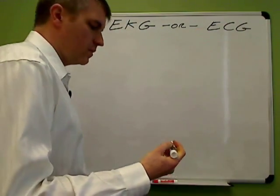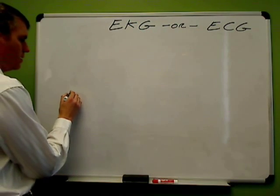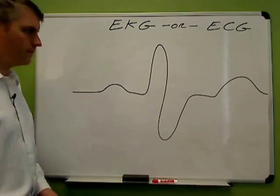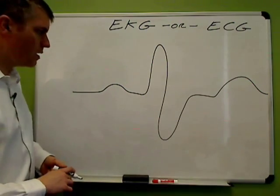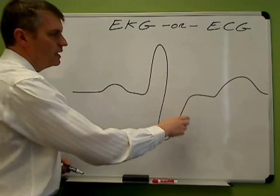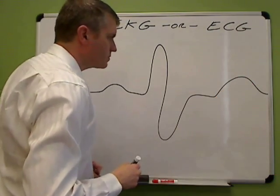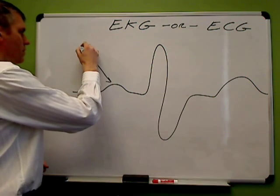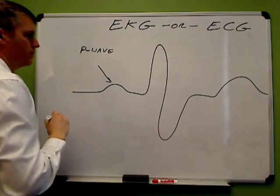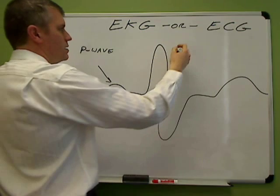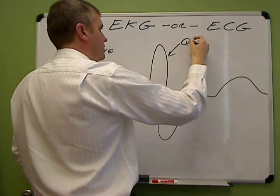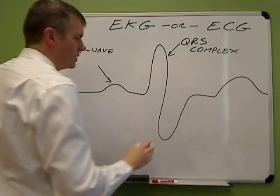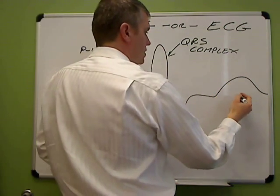Let's look at what an EKG might look like. What I do is just draw out a basic EKG — it doesn't have to be pretty. It just has to have these three major parts: a little bump beforehand, then a big bump, and then a medium-sized bump at the end. There are names for each one of these bumps. This one is called the P wave, this big one here is called the QRS complex, and then this over here is called the T wave.